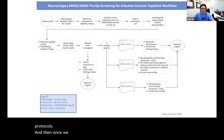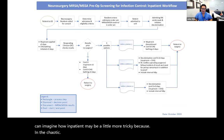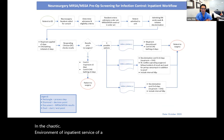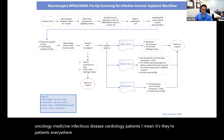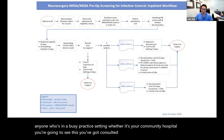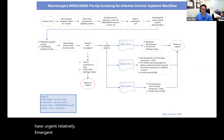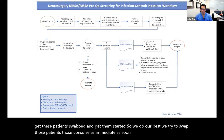Then we did the same for inpatient. You can imagine how inpatient may be a little more tricky, because in the chaotic environment of a major center like the MGH — where patients get transferred in, there are emergency patients, consultations from oncology, medicine, infectious disease, cardiology — patients are everywhere. For anyone in a busy practice setting, whether community hospital or academic, you get consulted. Part of the problem is urgent or relatively emergent cases going to the OR next day — how do you mobilize, get these patients swabbed, and get them started? We try to swab those consults as soon as they come in and get them started on treatment.